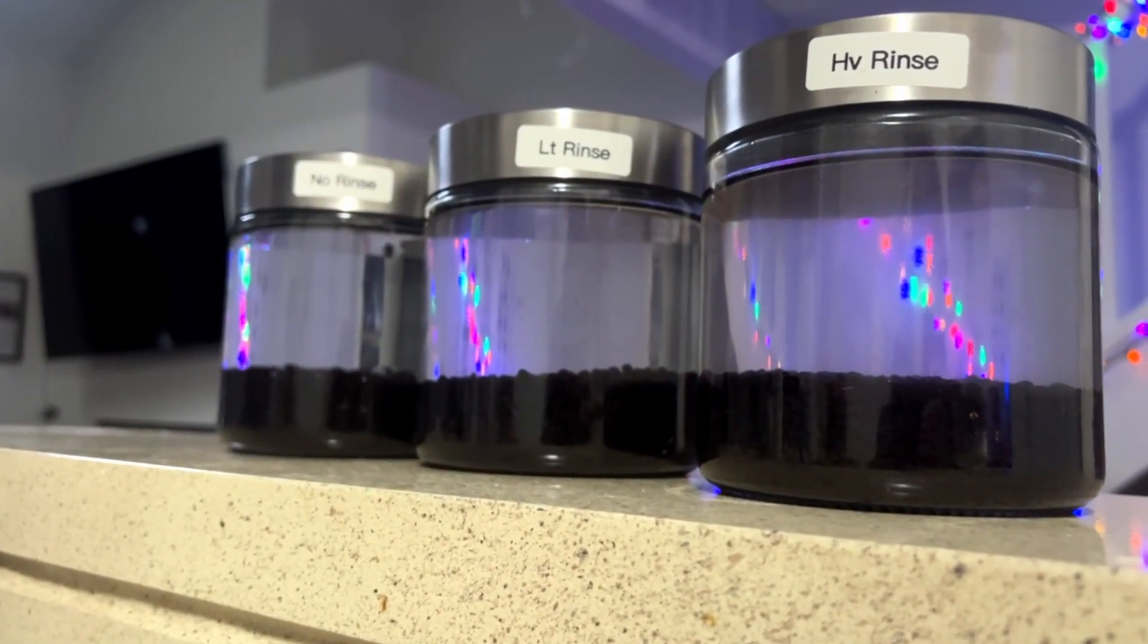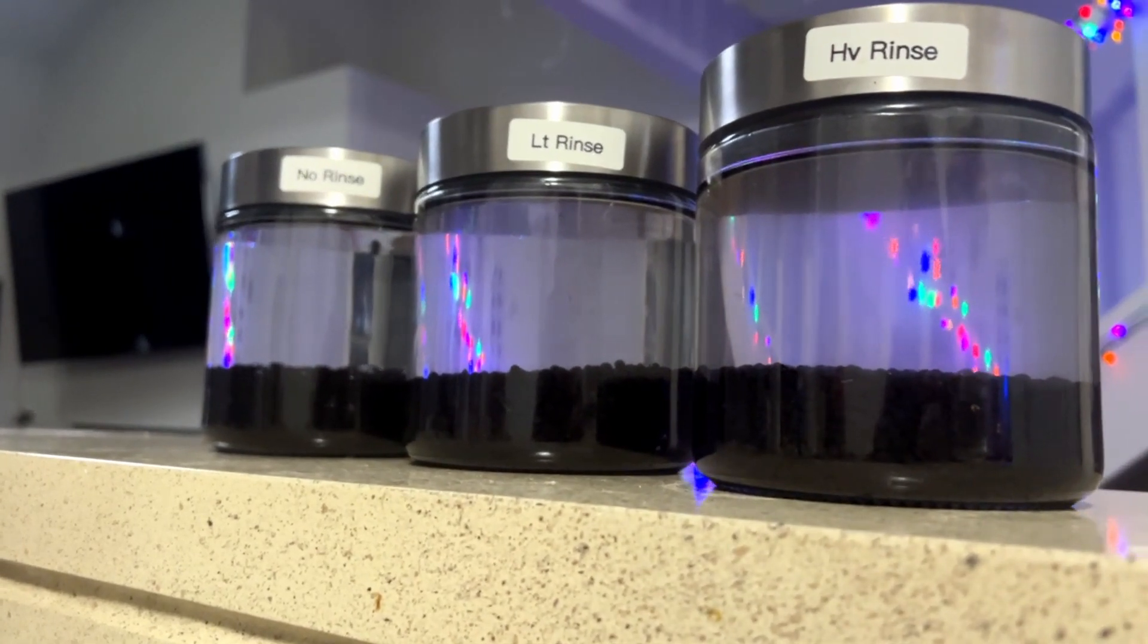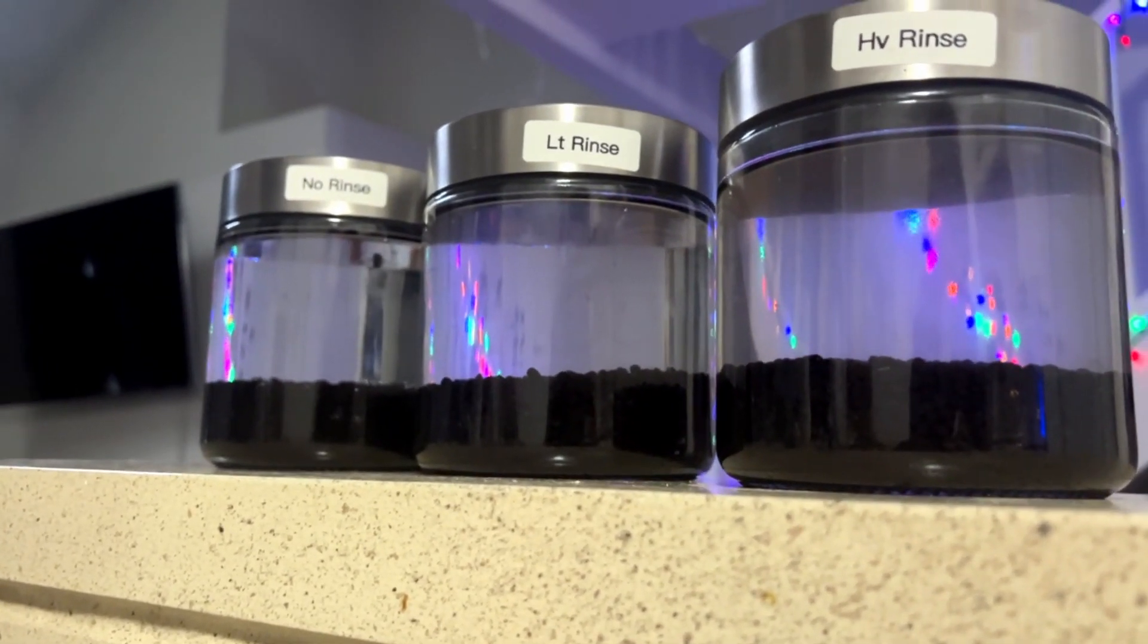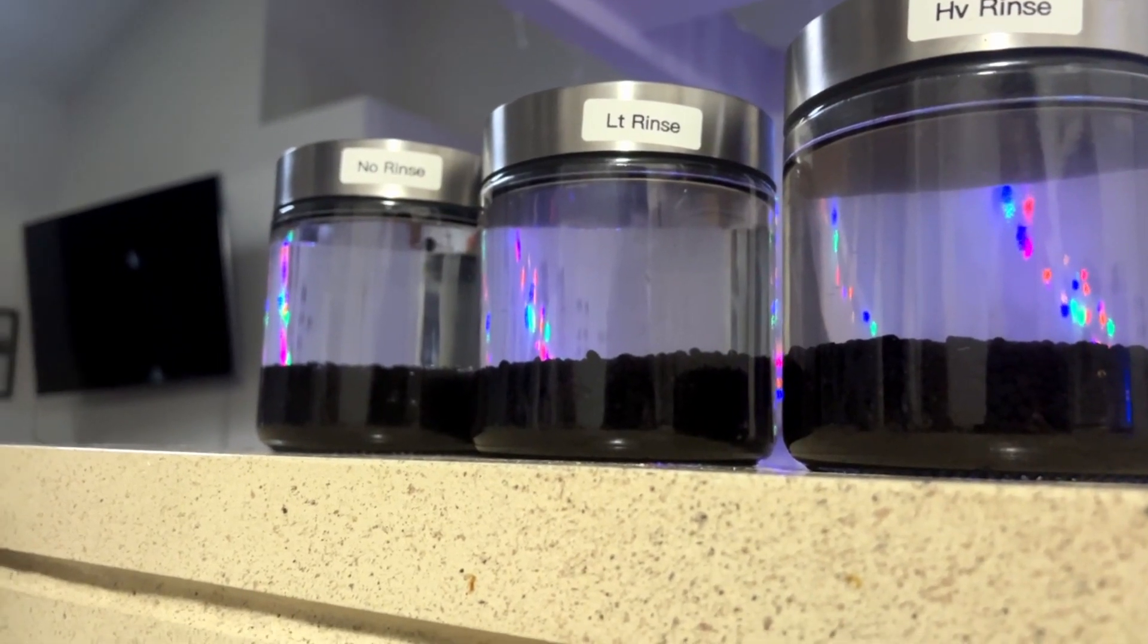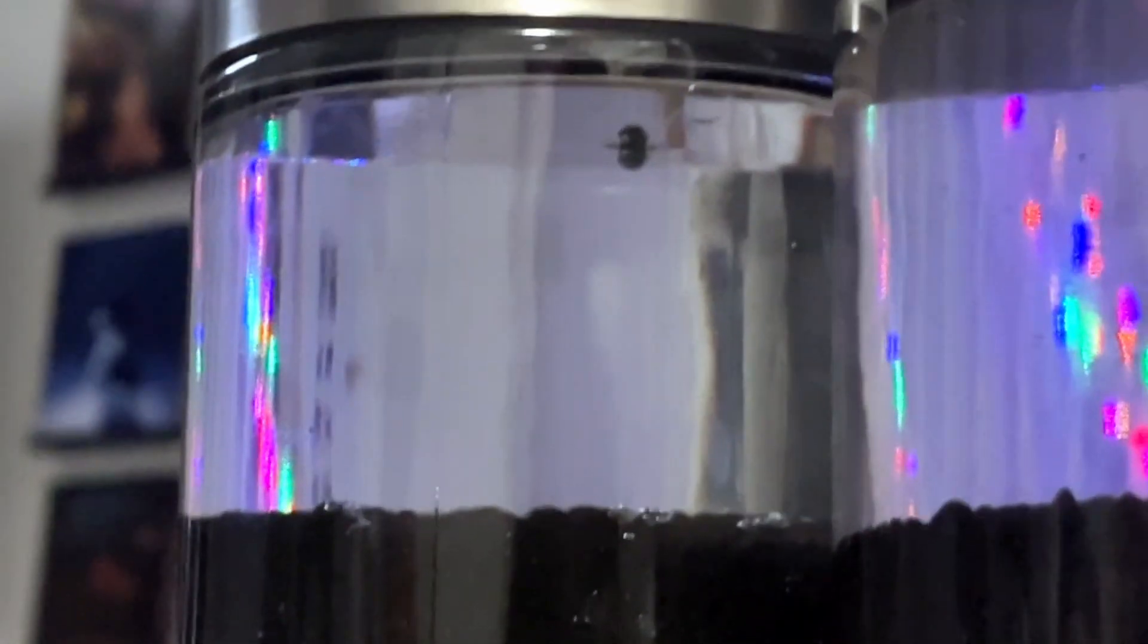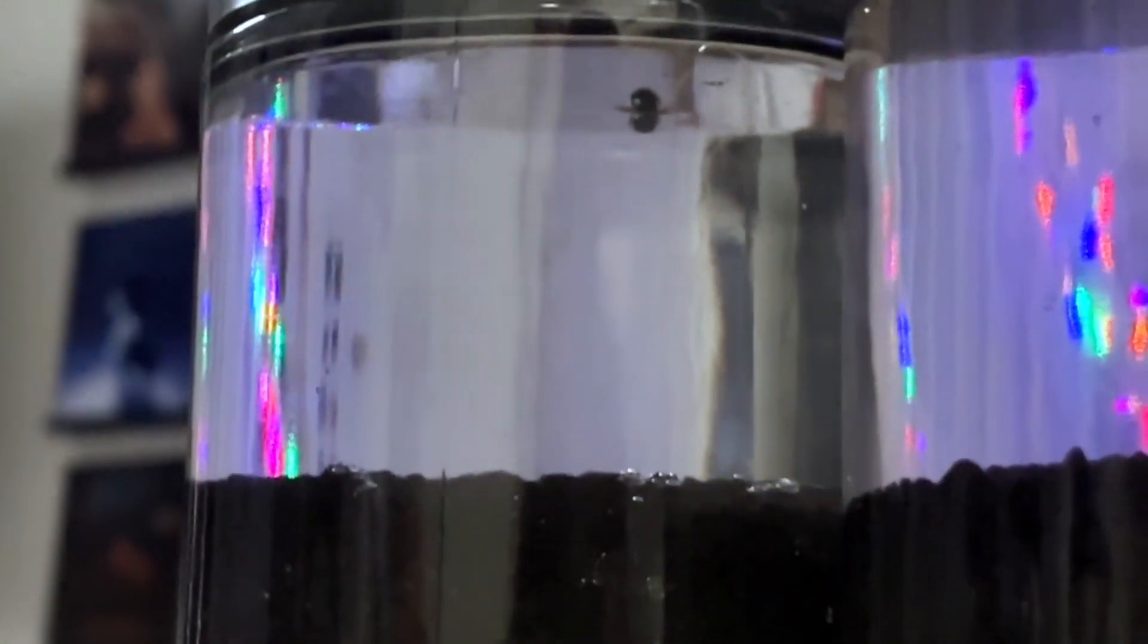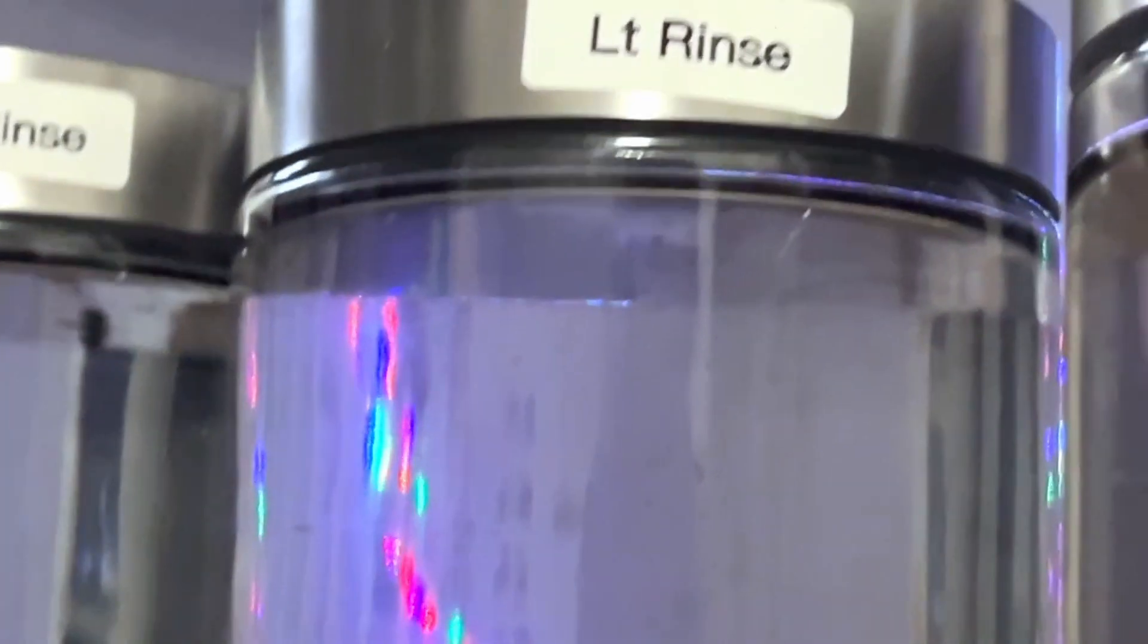By the next morning all three jars had settled significantly. The no rinse jar remained crystal clear while the light rinse jar showed a faint haze and the heavy rinse jar still had some clouding. This shows that while rinsing affects initial cloudiness, long-term clarity can still be achieved though the no rinse method remains the most efficient.